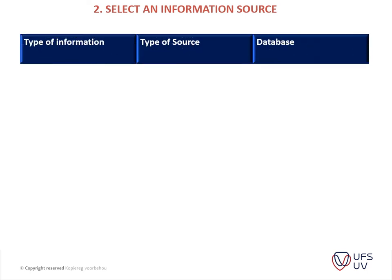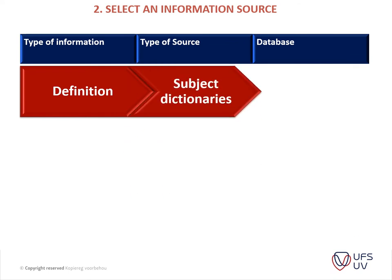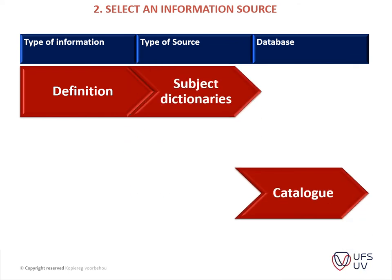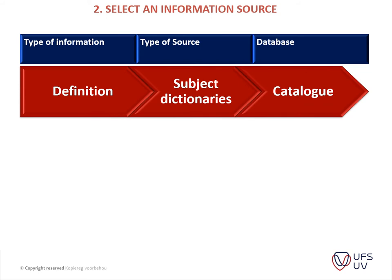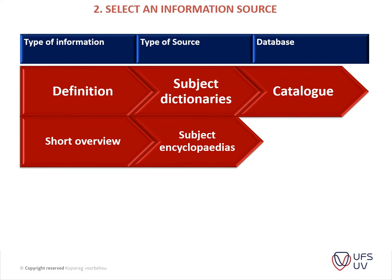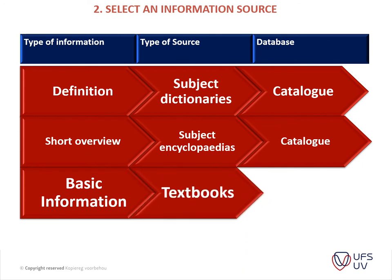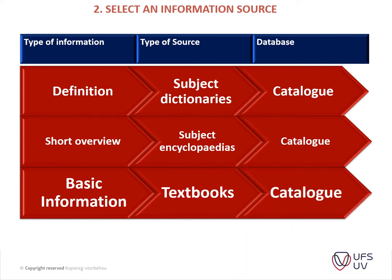Selecting an information source is determined by the type of information you are working on. If you are defining terms, you use subject dictionaries and search the catalog. If you are working on a short overview, you use subject encyclopedias and search the catalog. If you are working on basic information, you use textbooks, whether electronic or print, and use the catalog to do your search.